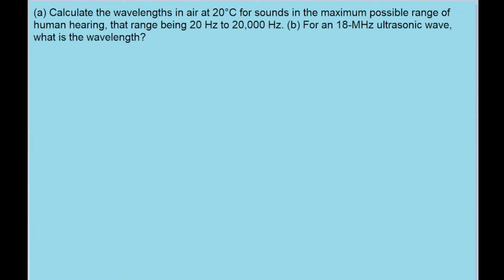When it mentions the wavelengths in air at 20 degrees Celsius for sound, the usual speed for this that we're going to use is 343 meters per second. That is how fast sound travels in air at 20 degrees Celsius.